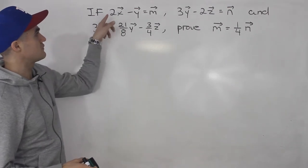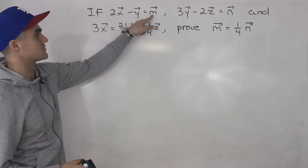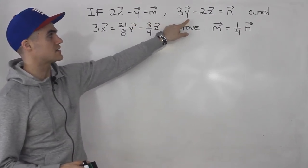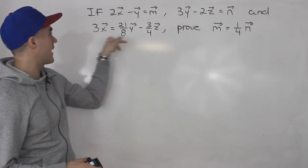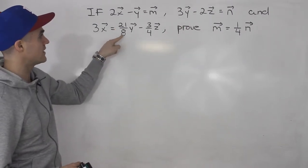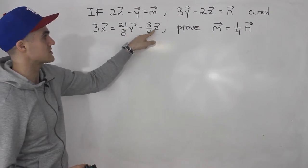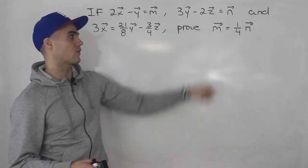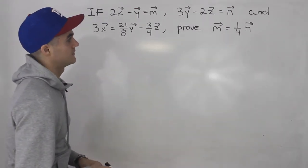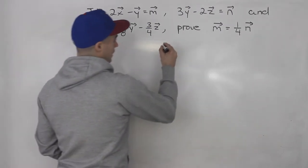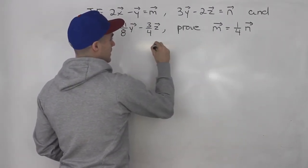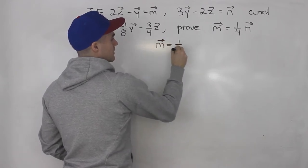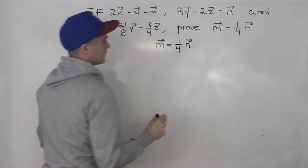So if 2 times vector x minus vector y is equal to vector m, and 3 times vector y minus 2 times vector z is equal to vector n, and 3 times vector x is 21 over 8 times vector y minus 3 over 4 times vector z, we have to prove that vector m is equal to one-fourth of vector n. So let's write out the statement that we want to prove: vector m is equal to one-fourth of vector n.